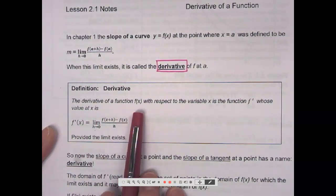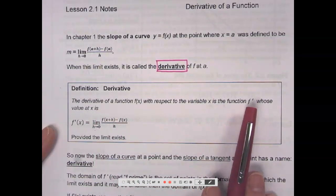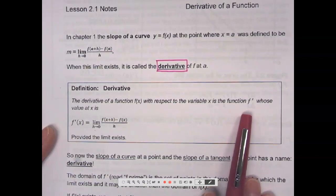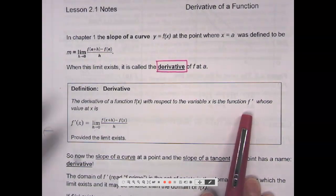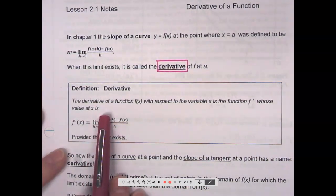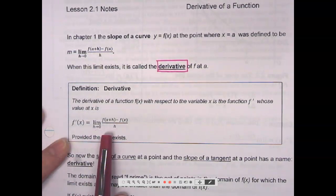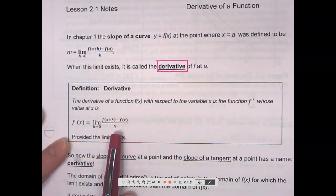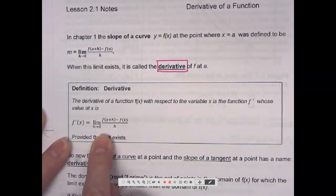The slope of the tangent, or the instantaneous rate of change of a function at a particular point. So, definition of derivative. The derivative of a function f of x with respect to the variable x is the function f prime. It's like a little superscript of an apostrophe almost.